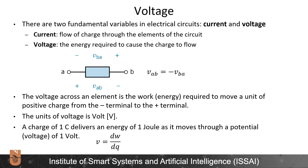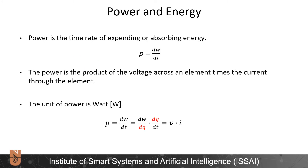Voltage V is equal to the derivative of work with respect to charge. Power is the time rate of expending or absorbing energy. Mathematically, P is equal to the time derivative of work. The power is the product of voltage across an element times the current through that element, with units of Watts (W). We can write P equals dW/dt as dW/dQ times dQ/dt — since dW/dQ equals voltage V and dQ/dt equals current I, therefore P equals V times I.